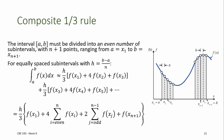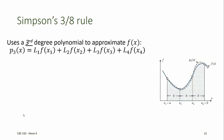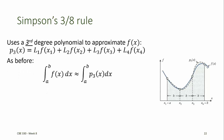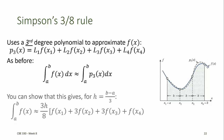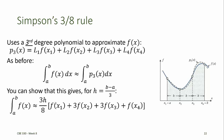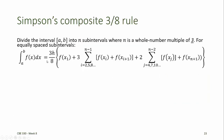The composite one-third rule takes its name from the prefactor h over 3 in the summation. The next higher-order polynomial would be a cubic polynomial over an interval containing four points, which can again be found using a Lagrange or Newton interpolating polynomial. Integrating that polynomial over the domain yields Simpson's 3/8 rule, which takes its name from the prefactor 3h over 8 multiplying the summation. Simpson's 3/8 rule can also be formulated as a composite rule.